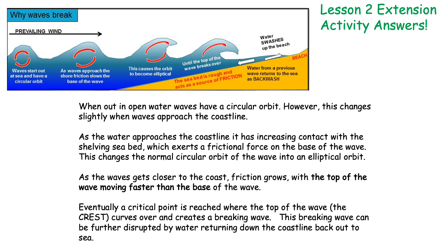As the wave gets close to the coast, friction grows even more and the top of the wave moves faster than the base, because that's where the friction is building up. The friction is building up at the base of the wave, causing it to be slower than the water moving at the top of the wave going up to the beach. Eventually at a critical point, the top of the wave — which is called the crest — curves over and this creates the breaking wave. This breaking wave can further be disrupted by water returning back out to sea. So it's this backwash, the water moving back out to sea, that can disrupt that breaking wave even further.